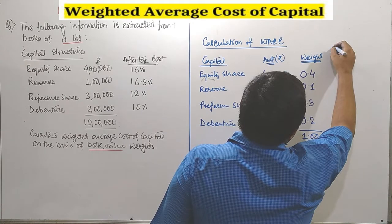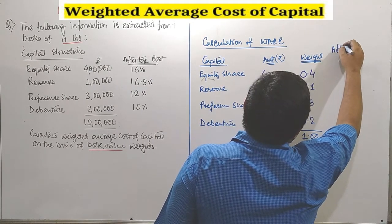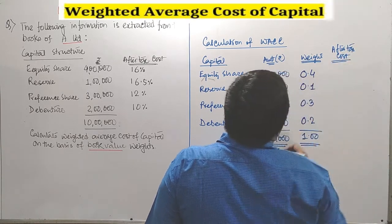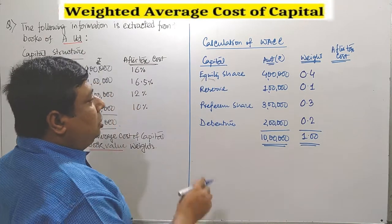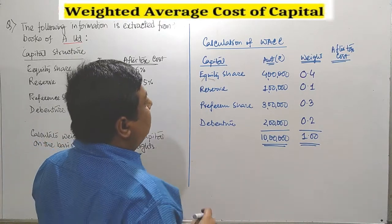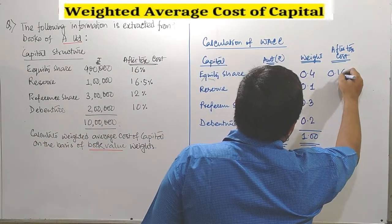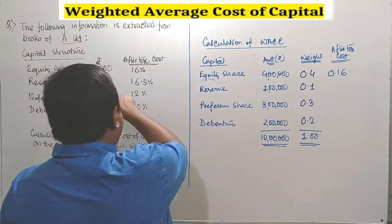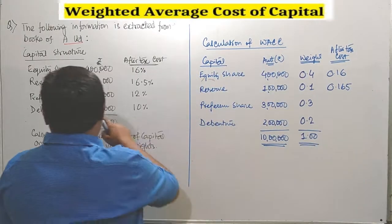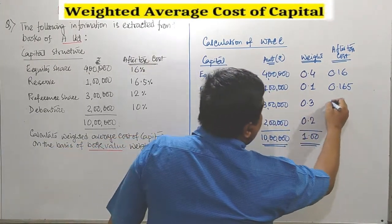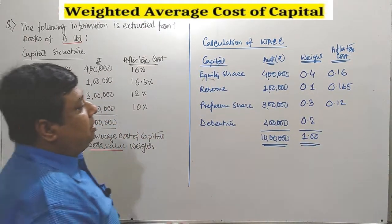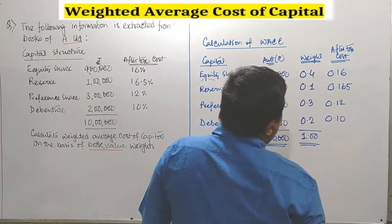Next, you are going to plot the after-tax cost column. Whenever you are going to calculate WACC, you have to consider the after-tax cost of each and every instrument. For equity share it is 16%, i.e., 0.16. For reserve or retained earnings it is 16.5%, i.e., 0.165. For preference share it is 12%, i.e., 0.12. For debenture it is 10%, i.e., 0.10.